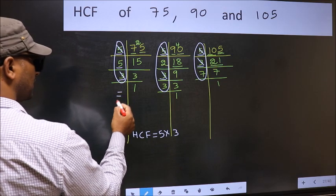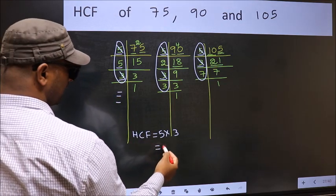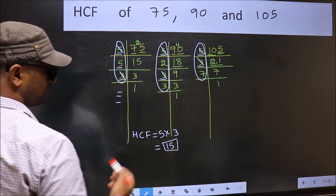No more numbers have been left out. Therefore, HCF is 5 into 3. 15 is our HCF.